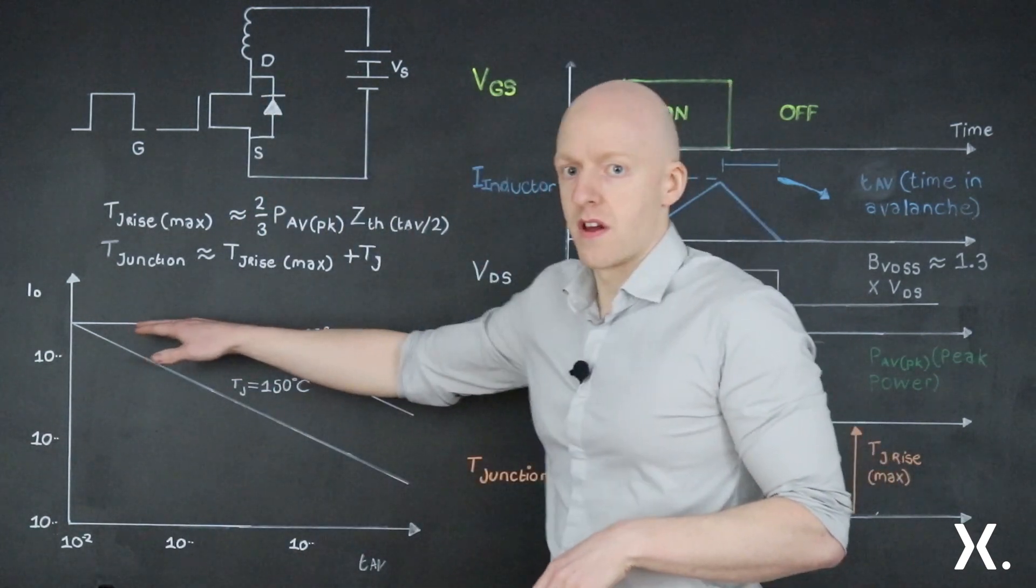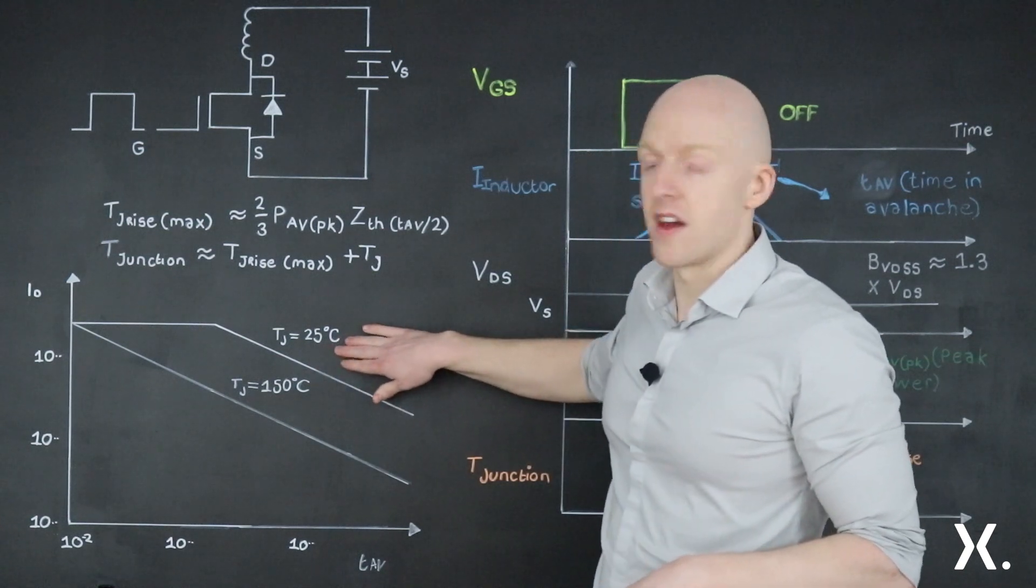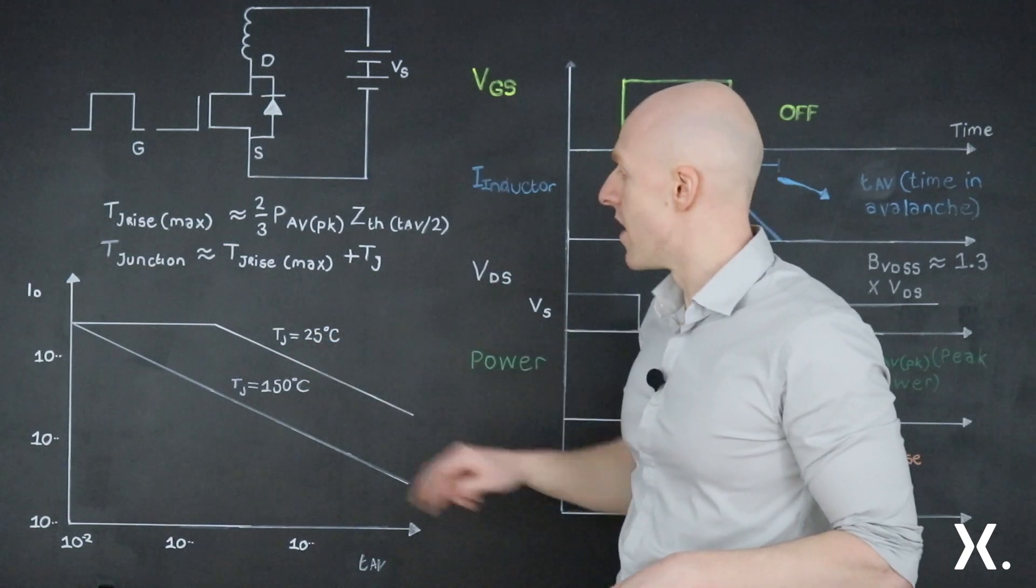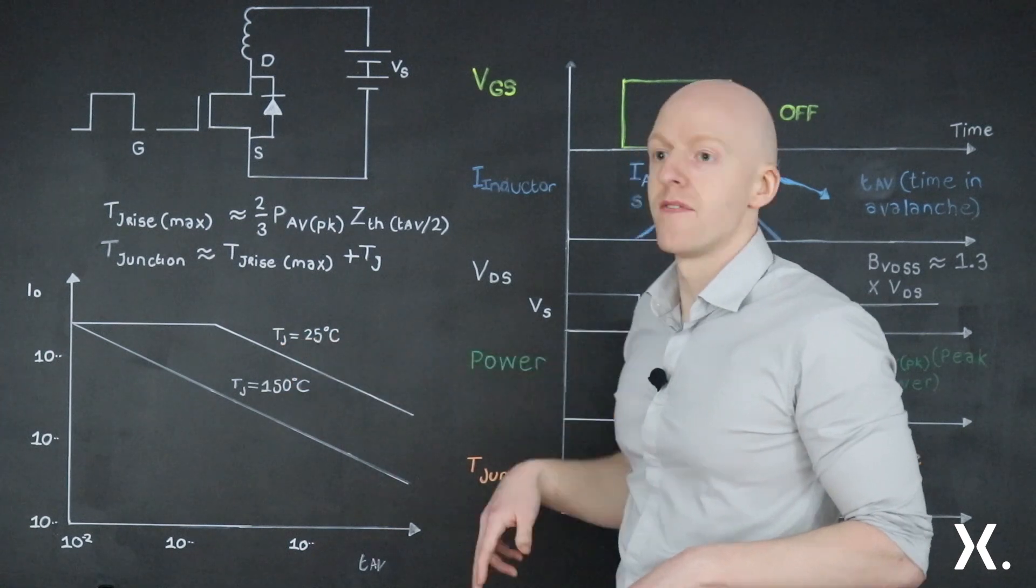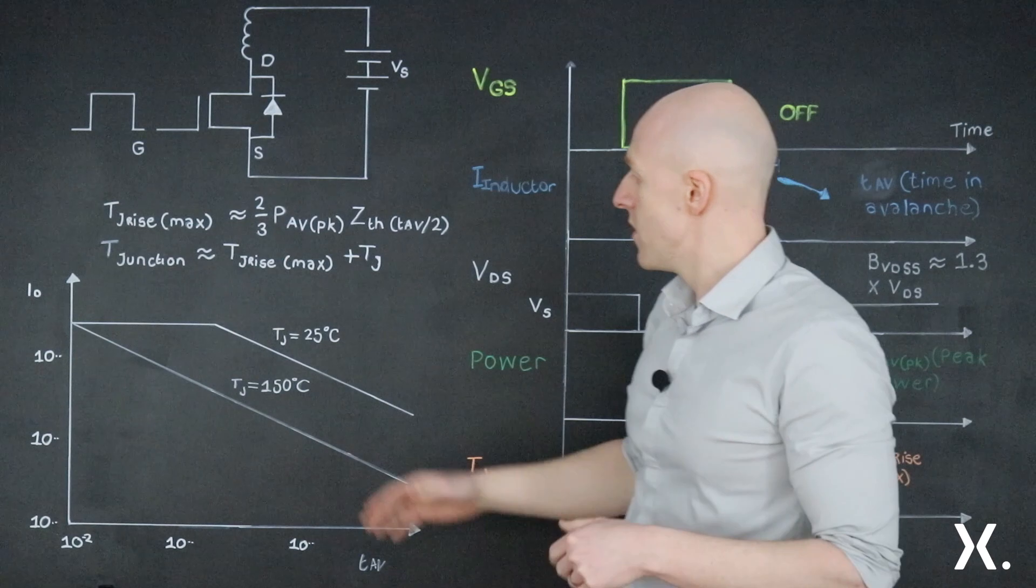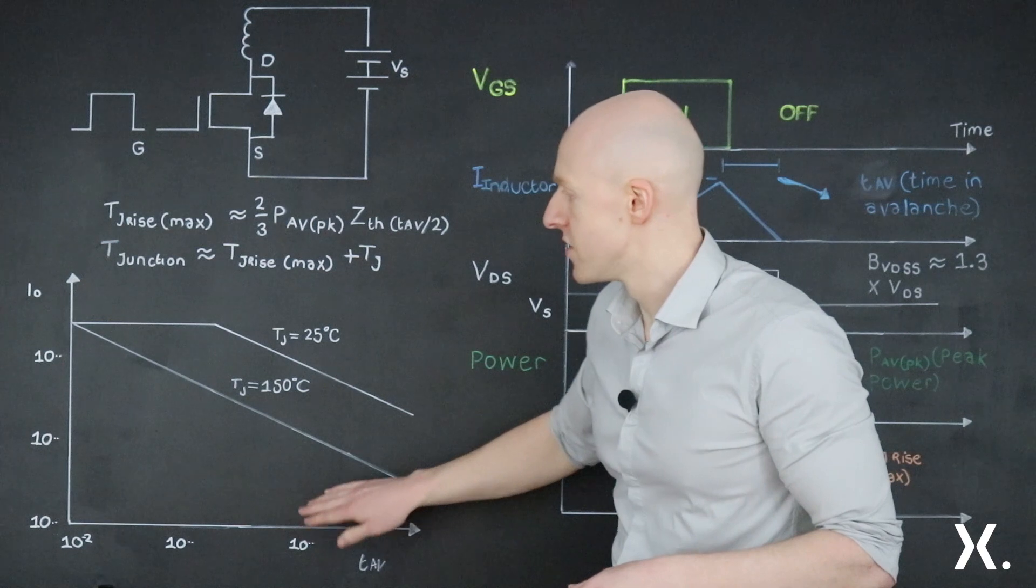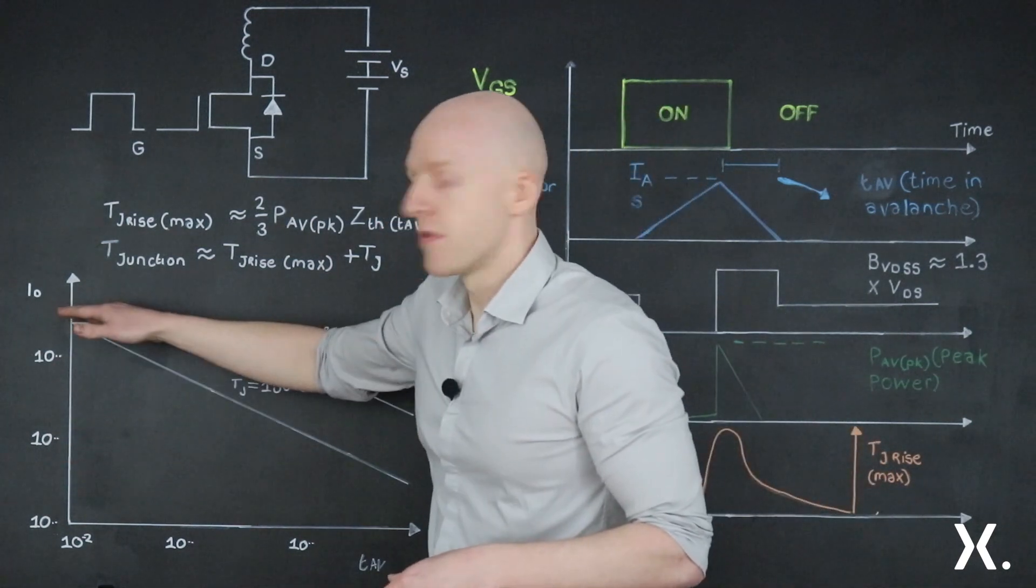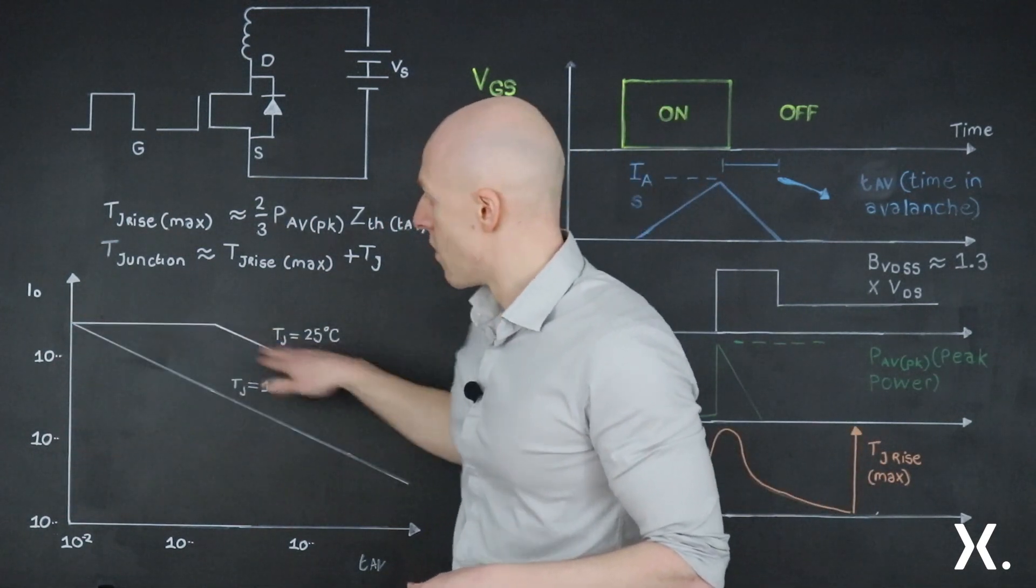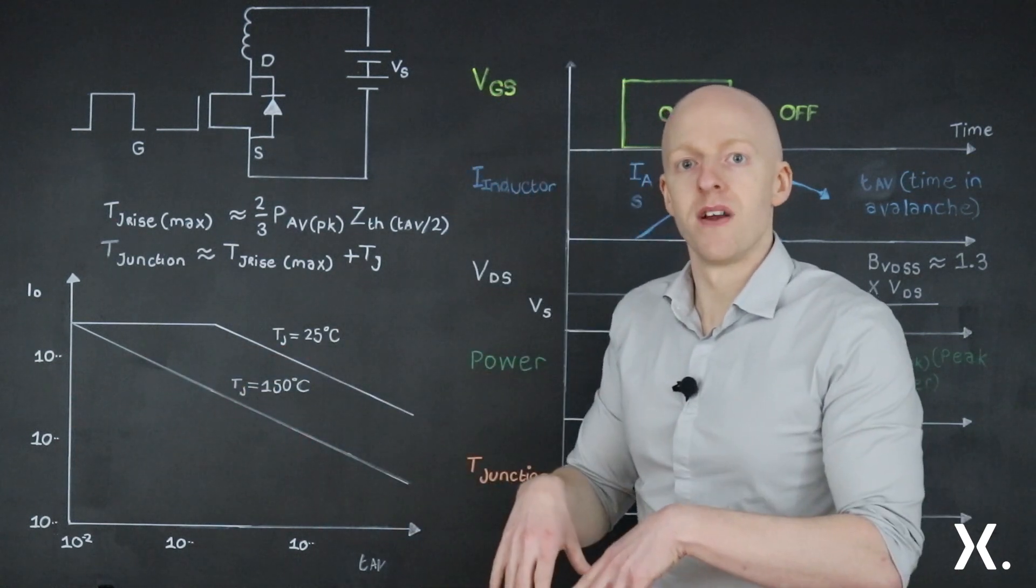So if we take a look at the chart again, we have a couple of lines. I'm looking first at the one labeled here for a junction temperature of 25 degrees. So that's your starting temperature. And what that's saying is, if you start at 25 degrees, and you spend X amount of time in avalanche, then you're allowed to go up to a peak current of where the line intersects. And then you know you're within the safe operating area.